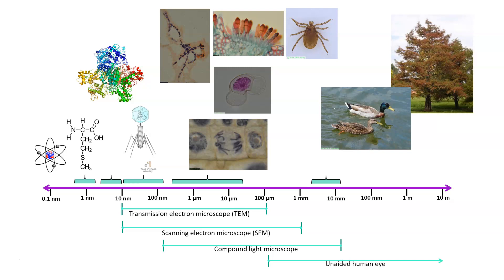Depending on what it is, we need different ways of being able to observe it, and this uses different types of microscopes. In this particular part we're going to use a compound light microscope that goes from about a micron up. You can see photographs of different materials in this size range, all taken with a microscope, so we need to be able to differentiate things because of the size they're at.